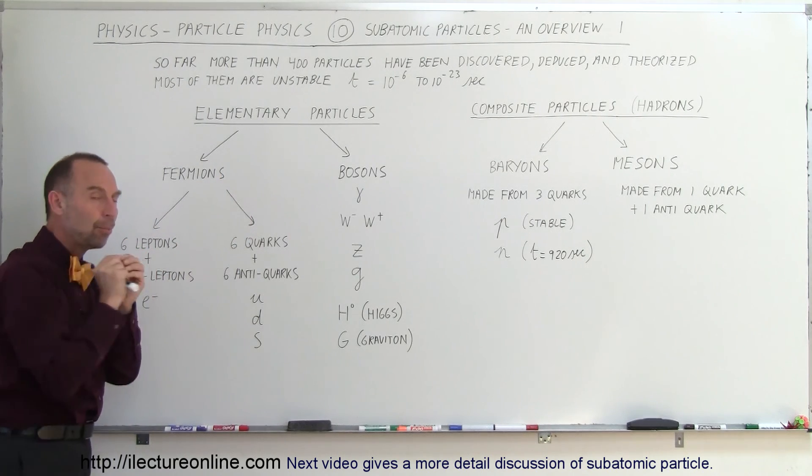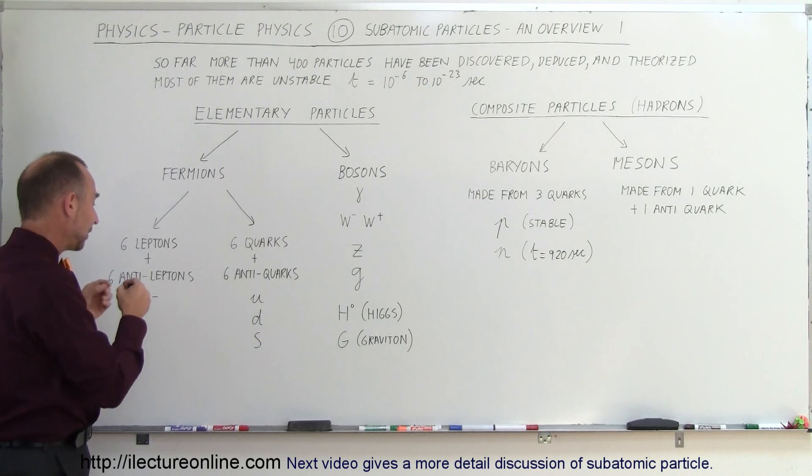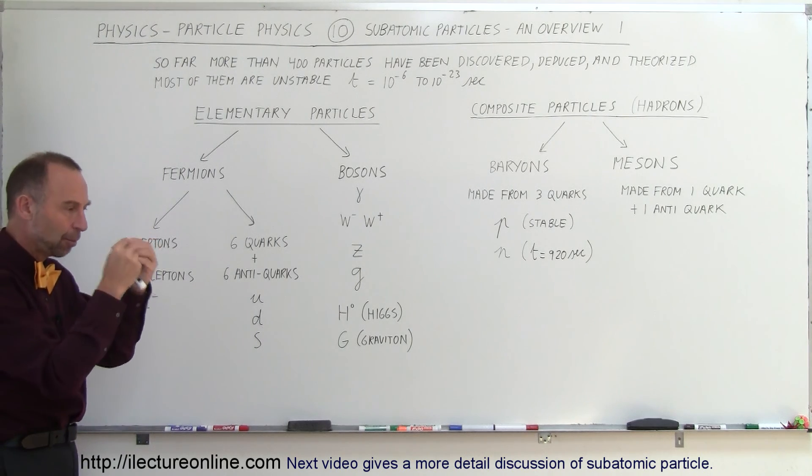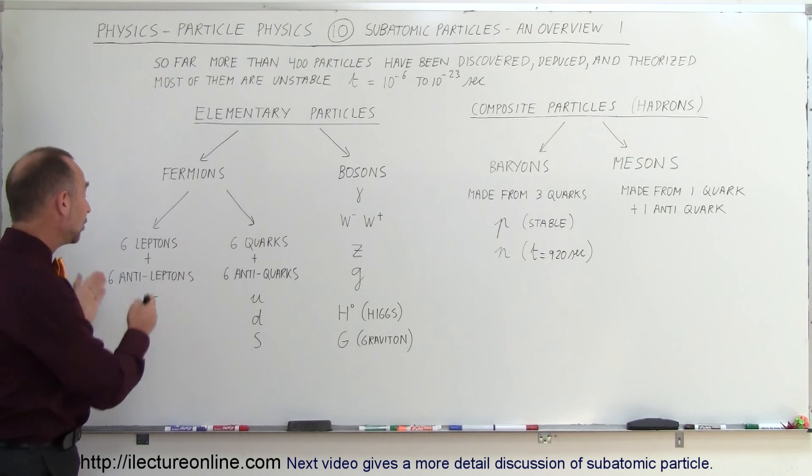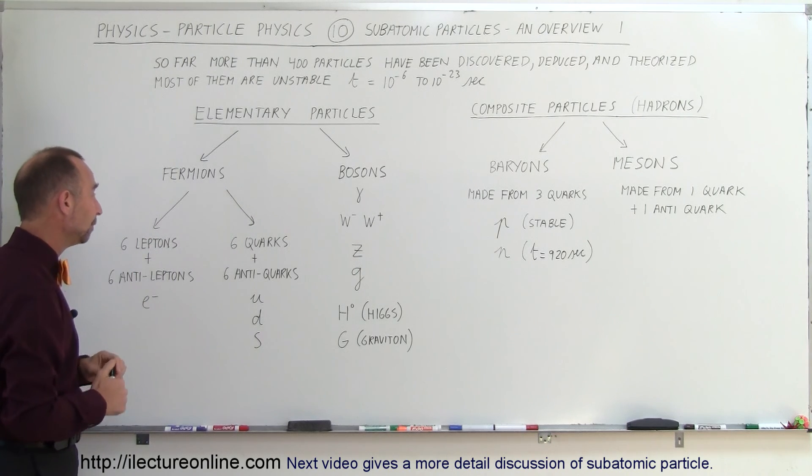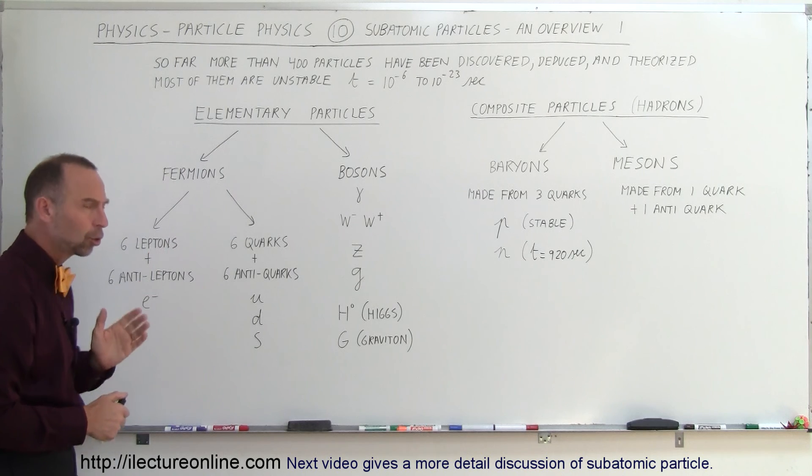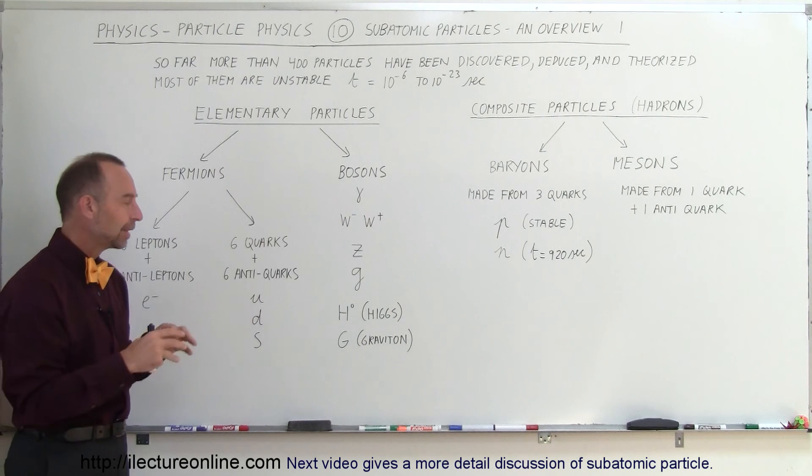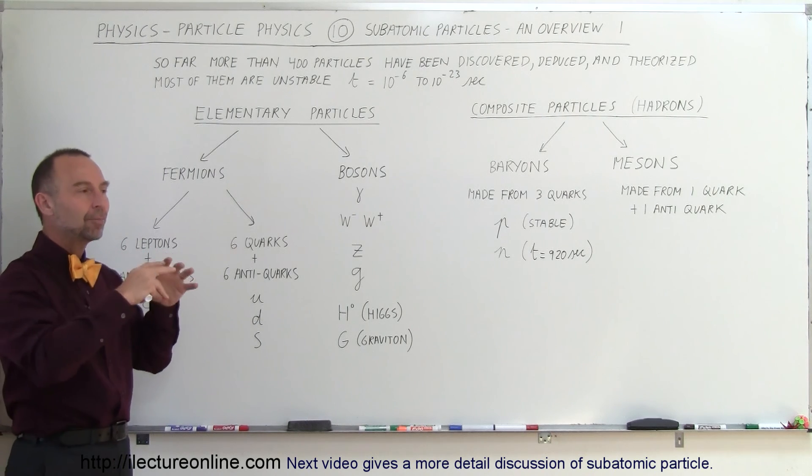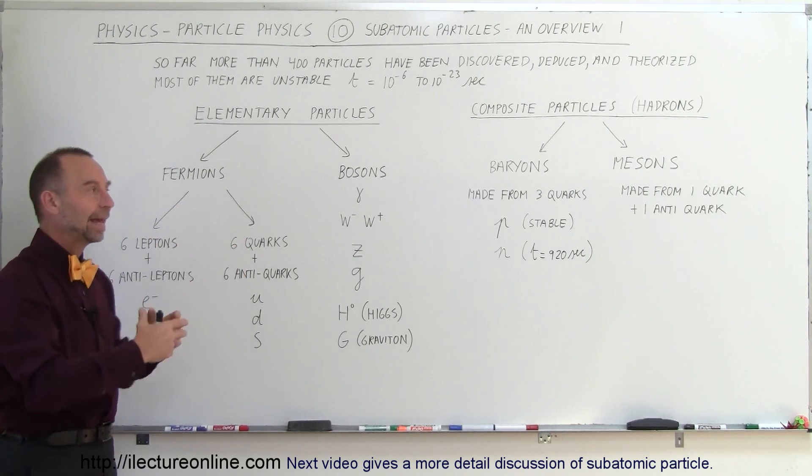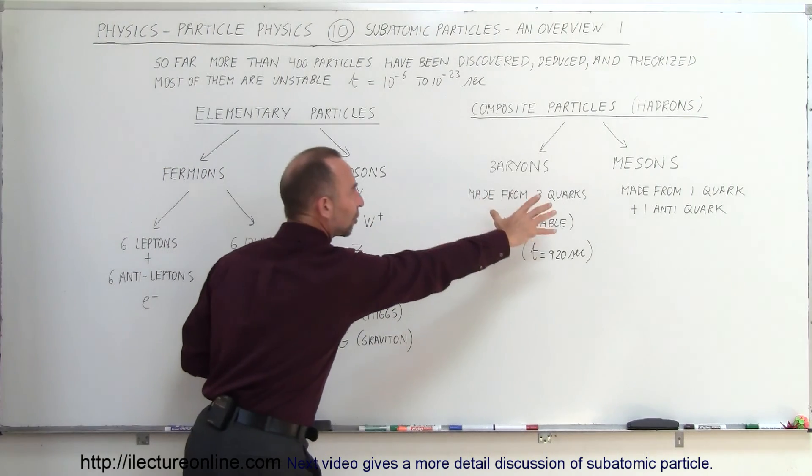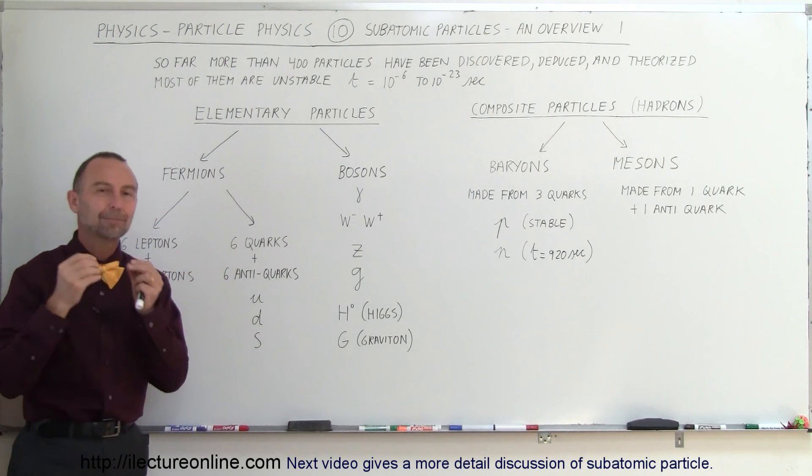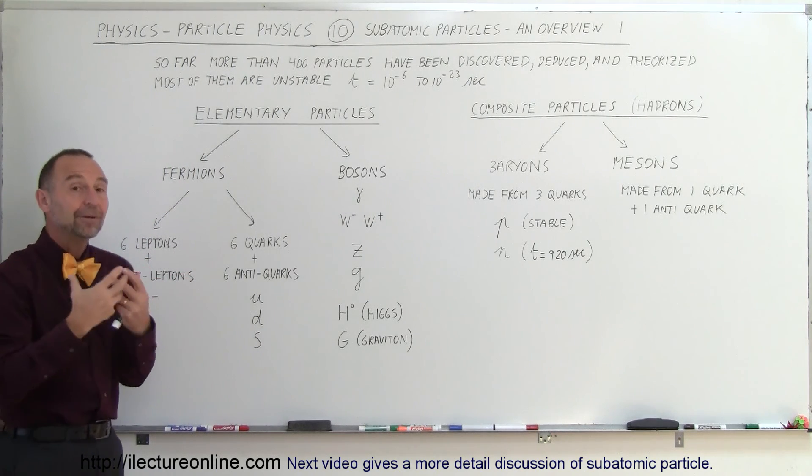The leptons are the very tiny point-like objects that don't seem to have any particular structure to them. It's just there it is. They have mass, they have point-like existence, and there's six of those, electron being one of them. Then we have what we call quarks. Now, quarks have never been seen isolated by themselves, but they actually form objects that are bigger than the quarks and they form what we call the composite particles. So the composite particles are made out of quarks.